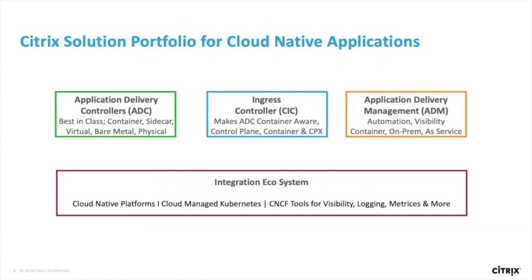At Citrix, our solution portfolio for cloud-native applications includes four components. The first is the application delivery controller itself — the Citrix ADC or NetScaler. The second is the ingress controller, whose role is to automate the ADC to be container-aware. It is offered as a container or built-in within the CPX. The third is the Application Delivery Management (ADM), the centralized management console enabling automation and visibility, deployable on-prem or as a service.